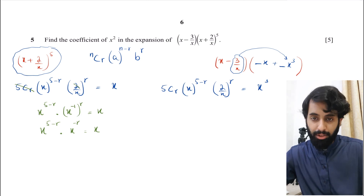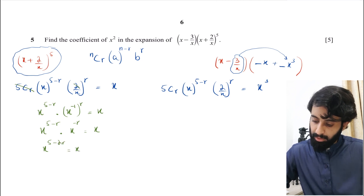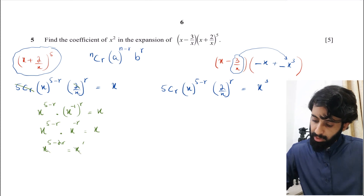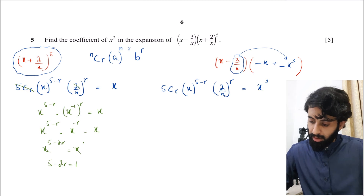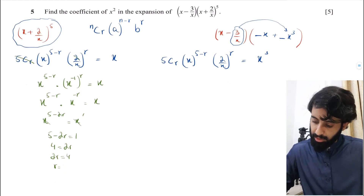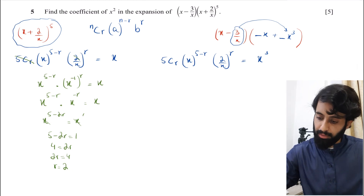Simplifying: x^(5 − r) · x^(−r) = x^(5 − 2r). Setting this equal to x¹, same base so compare powers: 5 − 2r = 1. Rearranging: 4 = 2r, so 2r = 4, which gives r = 2.